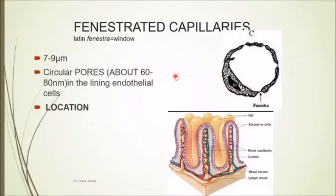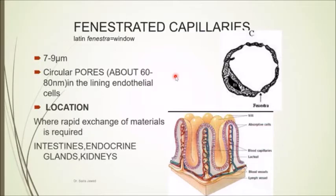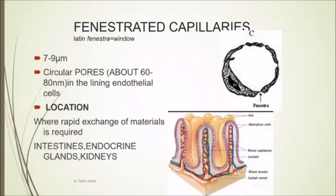Fenestrated capillaries have small pores and are present in locations like the intestines where nutrients have to be absorbed. We eat food containing micro and macronutrients like carbohydrates and proteins; these are broken down into smaller particles that have to be exchanged and enter the blood circulation from the intestines.